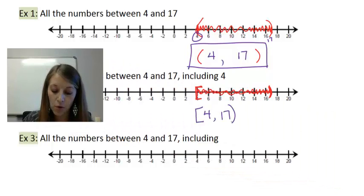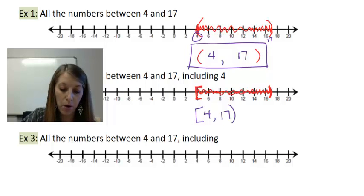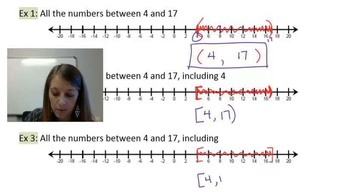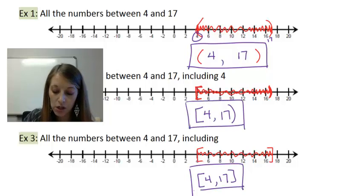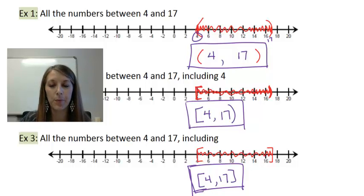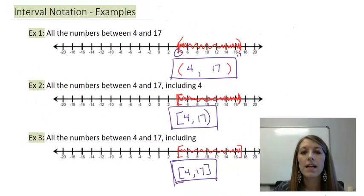Example 3, 4 and 17, including both. So I have a bracket at 4, I have a bracket at 17, shading all the numbers in between. And my interval notation is bracket with 4, comma, 17, bracket. And so now you see here examples of interval notation where they are all these boxed answers in purple. So that's the second way to notate sets of numbers.